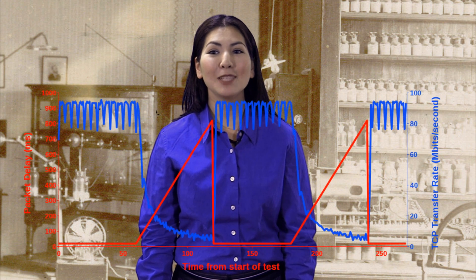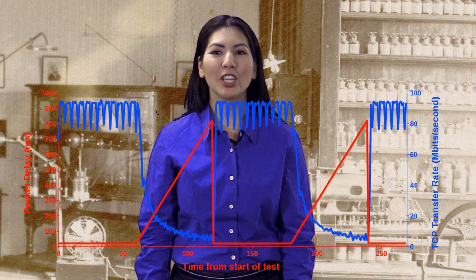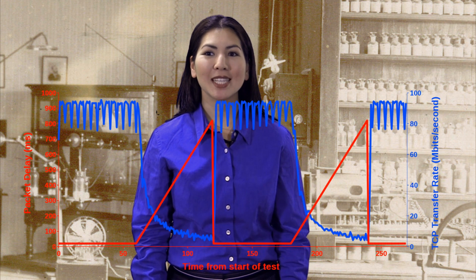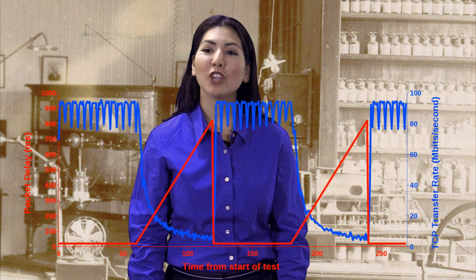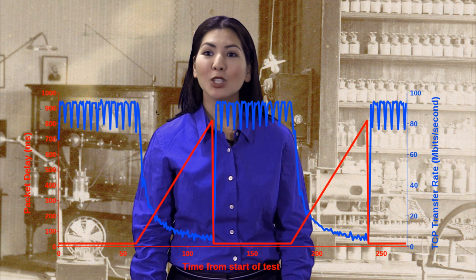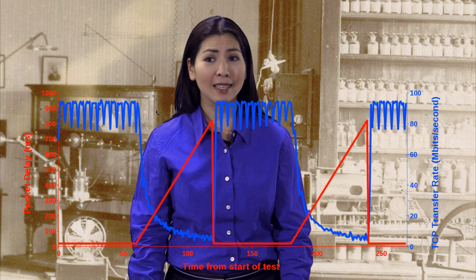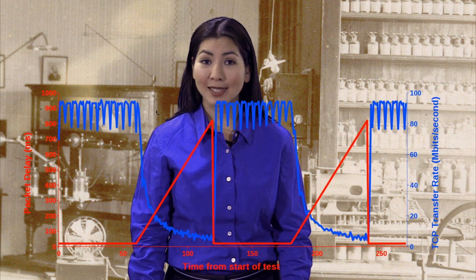I've graphed the iPerf TCP data rate so that we can see how it changes as Maxwell ramps up the network latency. This graph shows us how the TCP stacks respond to the changing delay conditions created by Maxwell. Notice how the TCP data rate reacts dramatically to the increased delay, even though the underlying bandwidth remains the same.